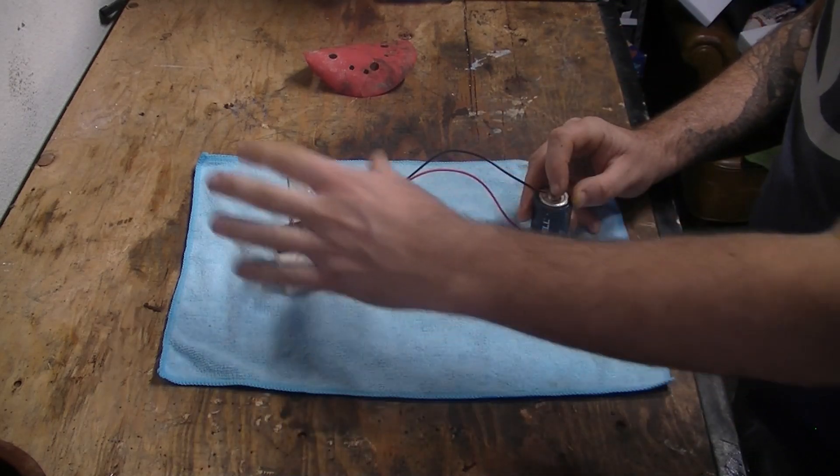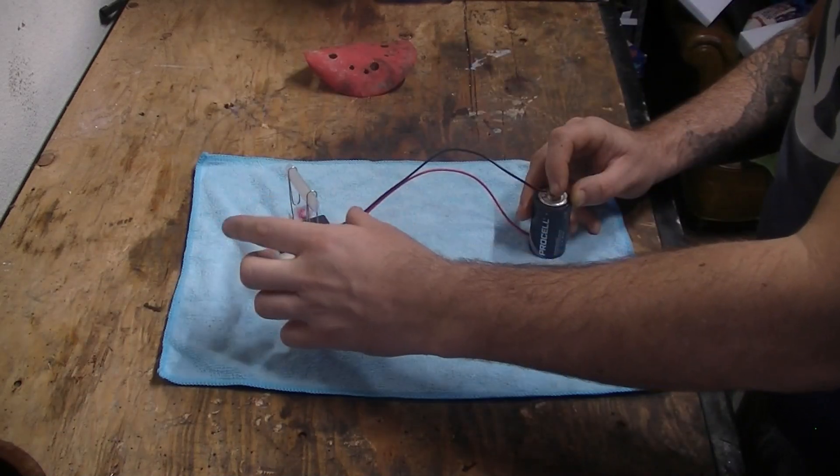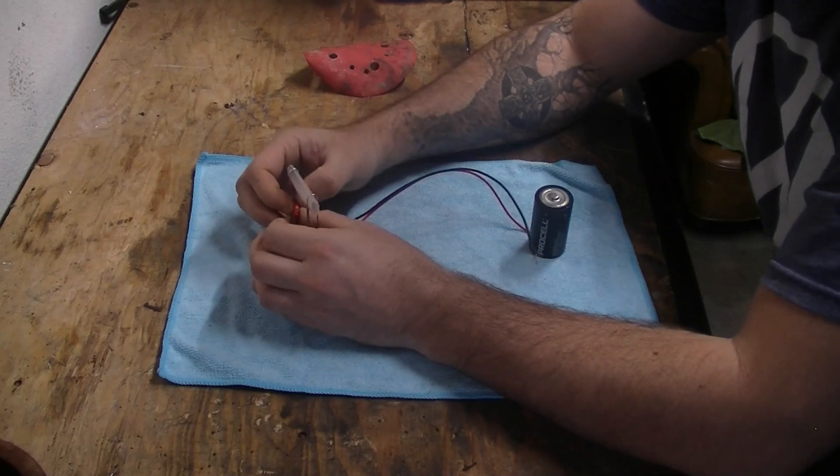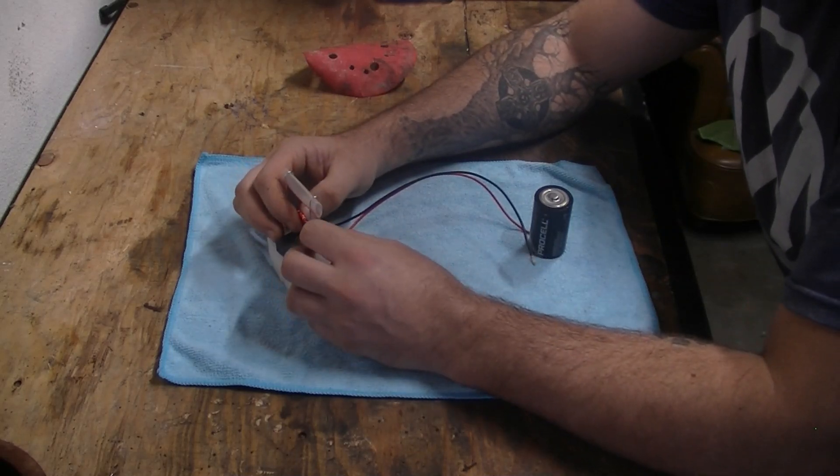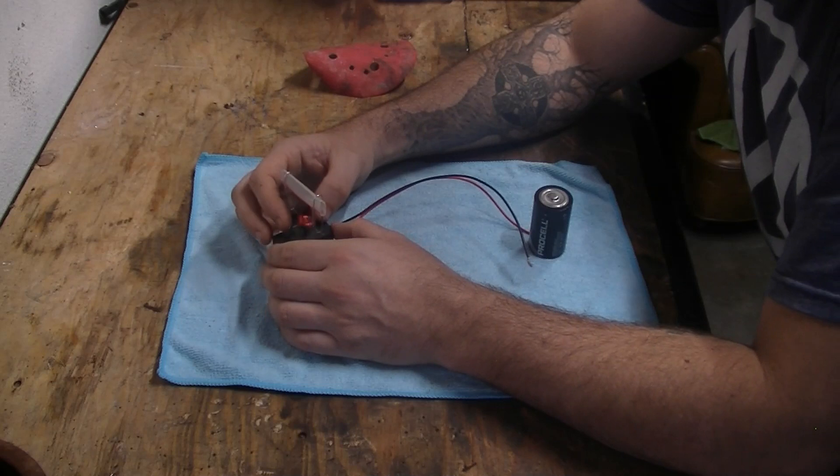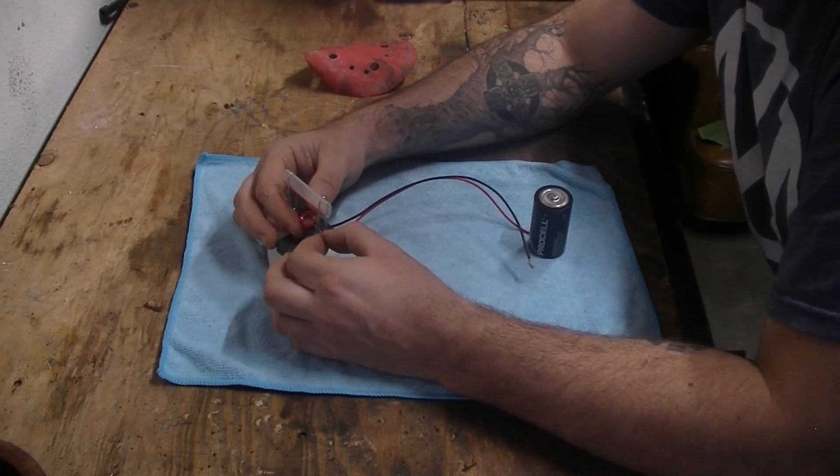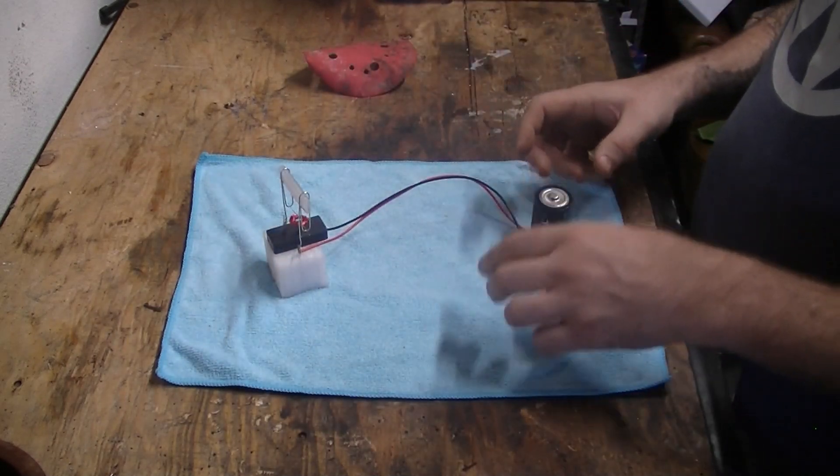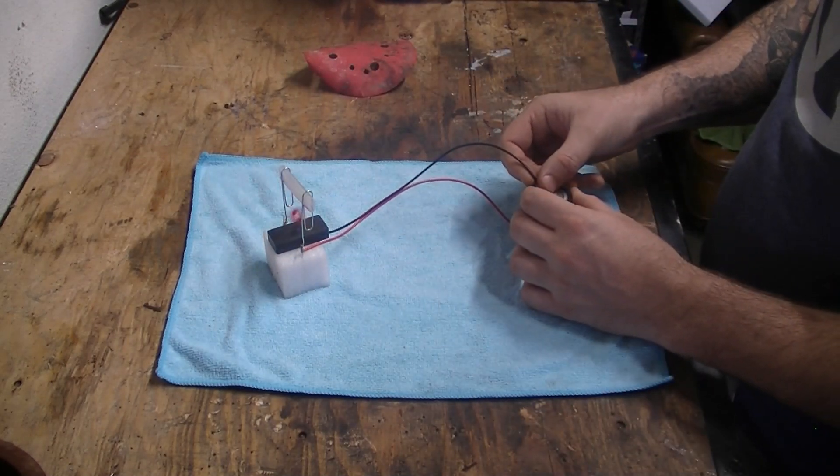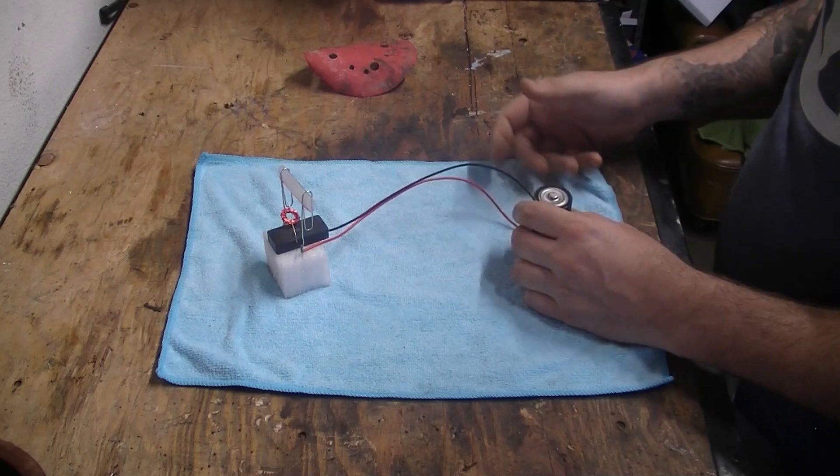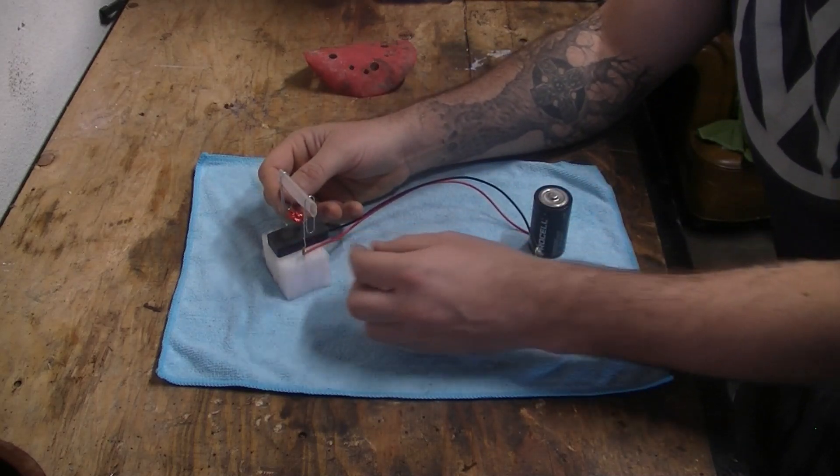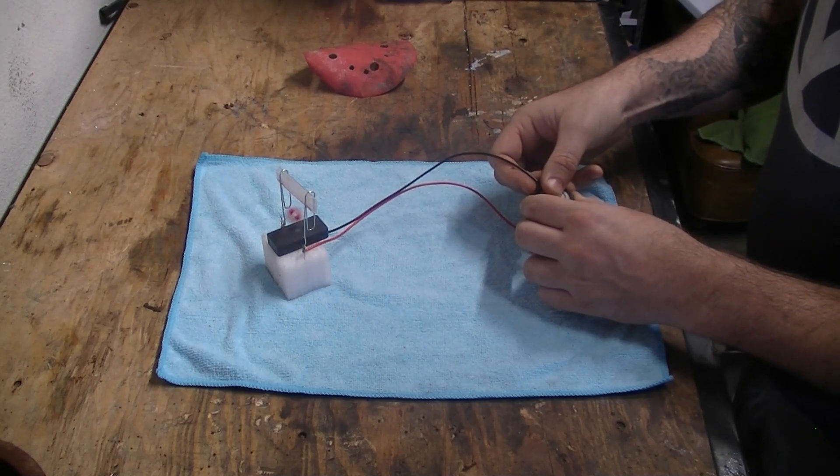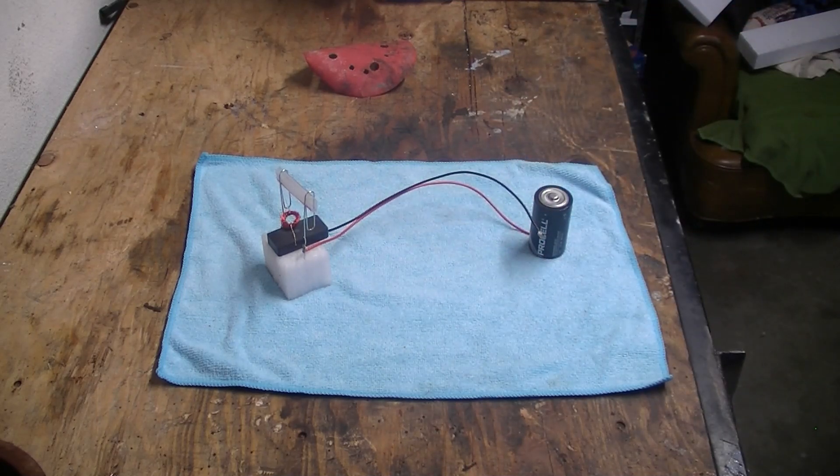There you go. It gets bound up there, but there you go. You can see that you run a little bit of electricity through it, a little bit of juice, and it becomes magnetized and flies away from that other magnet right there. There you go. Very satisfactory little electric motor.